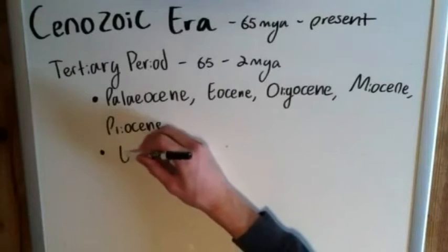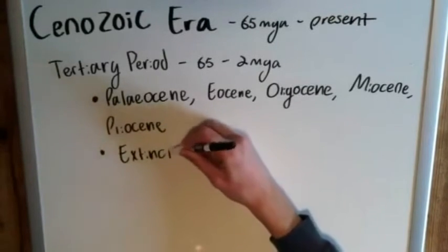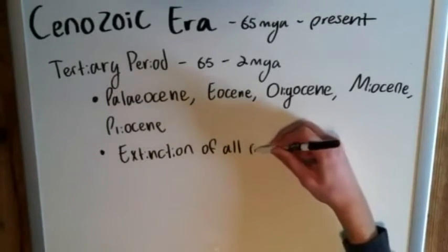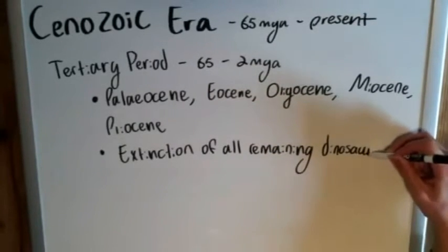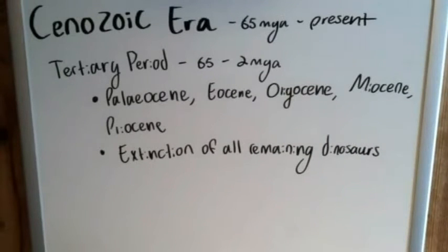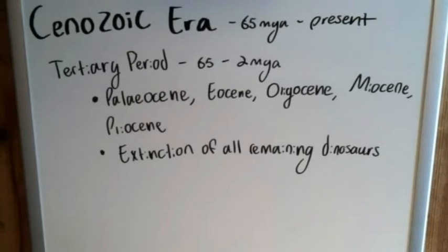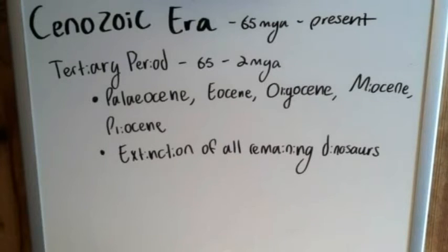The big overarching thing in the Tertiary Period is the extinction of all remaining dinosaurs. At the end of the Mesozoic Era, it was all non-avian dinosaurs — the ground dinos, the biggest ones you hear about in things like Jurassic Park — that went extinct. But there actually were a few that survived into the Cenozoic Era, mostly avian, flying ones. These smaller ones were less affected by the drastic change in global climate caused by huge amounts of dust filling up the atmosphere. So at this point, all remaining dinosaurs go extinct, and the reign of the lizards is officially over.